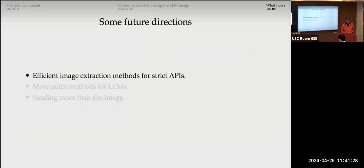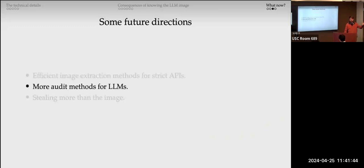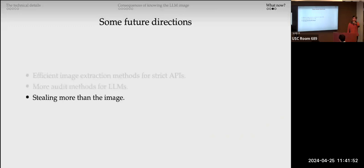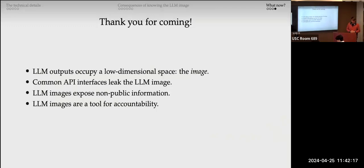Future directions include: exploring different attack models if logit bias is removed, expanding the auditing methods we developed, and potentially moving beyond the output layer. For instance, the layer norm — presumably the second-to-last layer — has its own bottleneck properties. Could we use the same techniques to figure out the layer norm parameters and learn more about the whole model? Thank you all for coming.